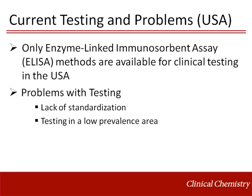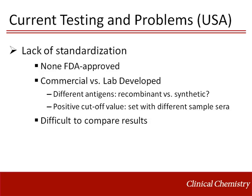In the United States, ELISA is the only method clinically available for hepatitis E diagnosis. There are two major issues with the available testing. One is a lack of standardization, and another is inherent difficulty when testing for a disease in a low-prevalence setting. As of right now, none of the available immunoassays are FDA-approved, meaning that laboratories use a mixture of commercially produced and lab-developed assays. This has huge implications for interlaboratory reproducibility of results, either clinically or in a study setting, as there is little or no standardization.